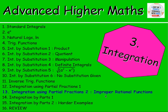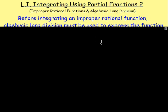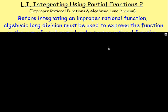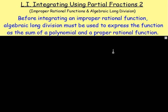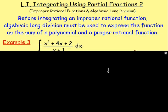When you have an improper rational function that you want to express in partial fractions, what do you have to use first? You got it — algebraic long division. So before integrating an improper rational function, we first have to use algebraic long division, and we do that to express the function as the sum of a polynomial and a proper rational function.